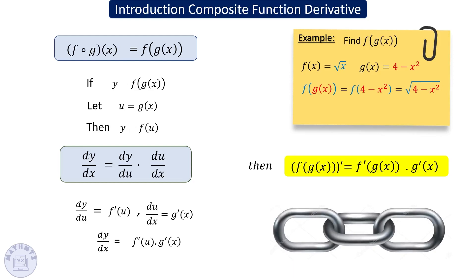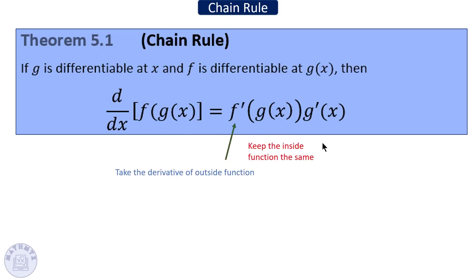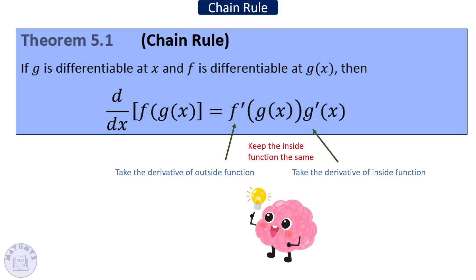To recap: the derivative of the composition of f and g is the derivative of the outside function times the derivative of the inside function. That's all.